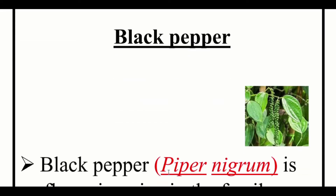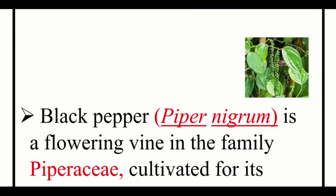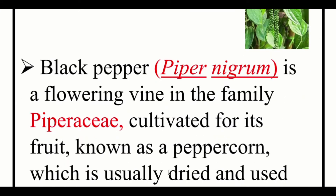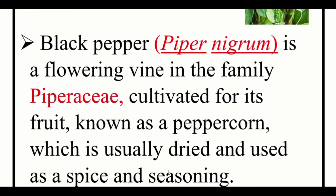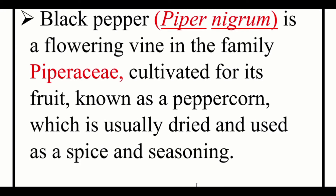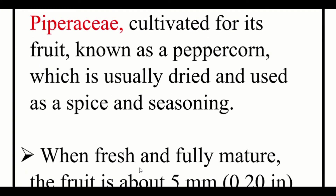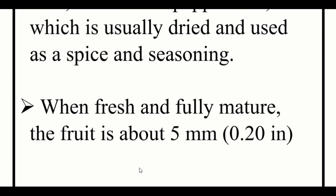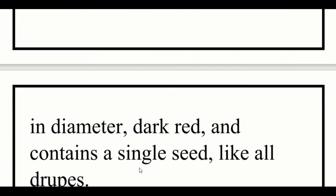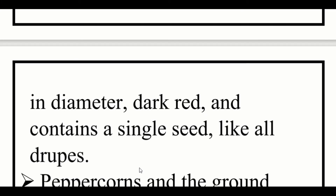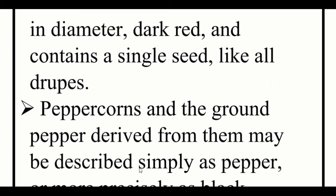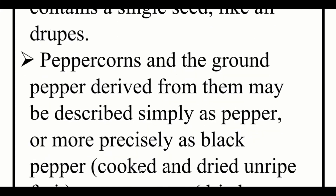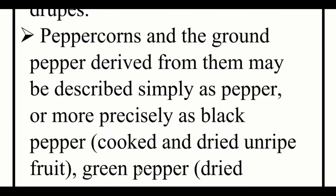Black pepper is a flowering vine in the family Piperaceae, cultivated for its fruit known as peppercorn, which is usually dried and used as a spice and seasoning. When fresh and fully mature, the fruit is about 5mm in diameter, dark red, and contains a single seed like all drupes. The ground pepper derived from them may be described as black pepper — cooked and dried fruits — or green pepper, dried and unripe fruit, and white pepper.